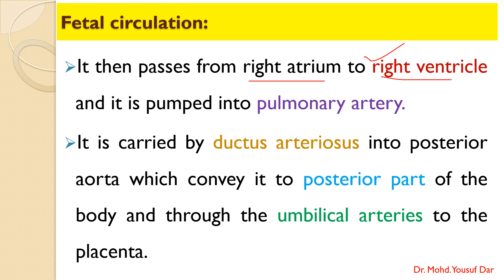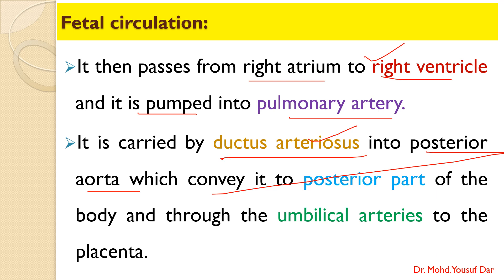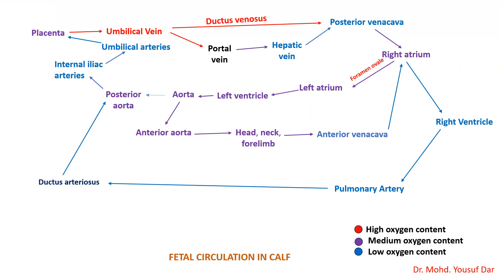The anterior vena cava carries the blood to the right atrium, and from the right atrium the blood goes into the right ventricle through the right atrioventricular orifice guarded by the tricuspid valve. From the right ventricle it is pumped into the pulmonary artery, and from the pulmonary artery via the ductus arteriosus it goes into the posterior aorta. The posterior aorta carries blood to the posterior parts of the body, then through the internal iliac artery into the umbilical arteries, which finally reach the placenta — and the cycle continues.